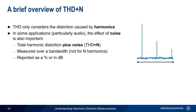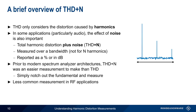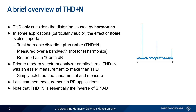Prior to the development of modern spectrum analyzers, total harmonic distortion plus noise was actually an easier measurement to make. A filter was used to notch out the fundamental, and then measurements were made over the bandwidth of interest. That said, total harmonic distortion plus noise measurements are less common in RF compared to audio applications. And one final note: total harmonic distortion plus noise is essentially the inverse of SINAD, another common measurement of noise and distortion.